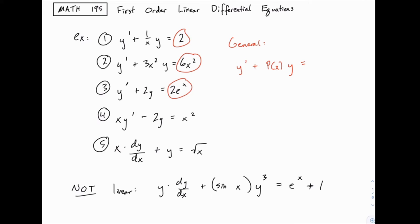2 as a constant we can still think of as a function of x, 6x squared, 2e to the x — those are all functions of x and we'll call those q of x, just to have a label for it. These letters p and q aren't significant, but this is the general structure of a first-order linear differential equation.